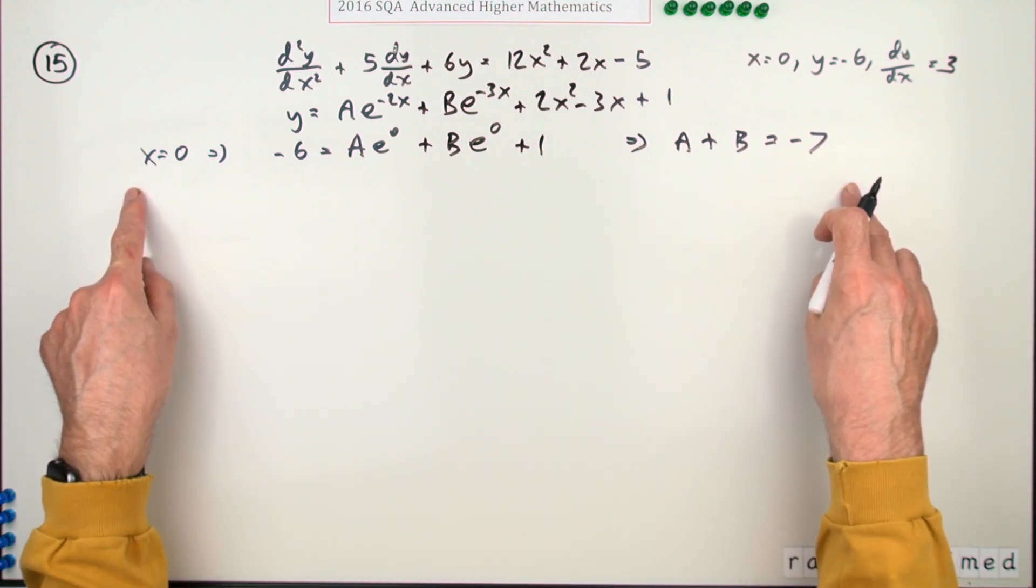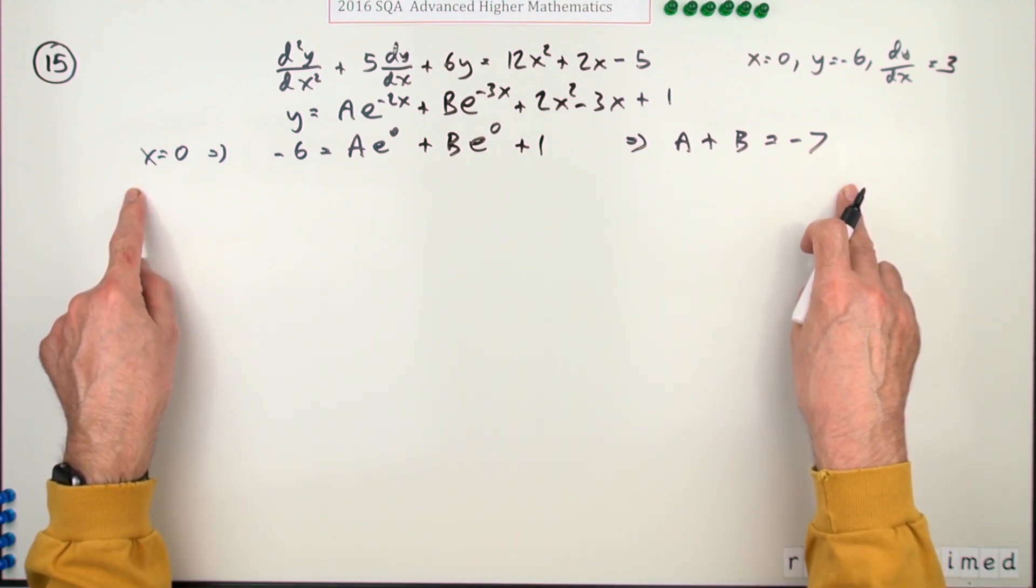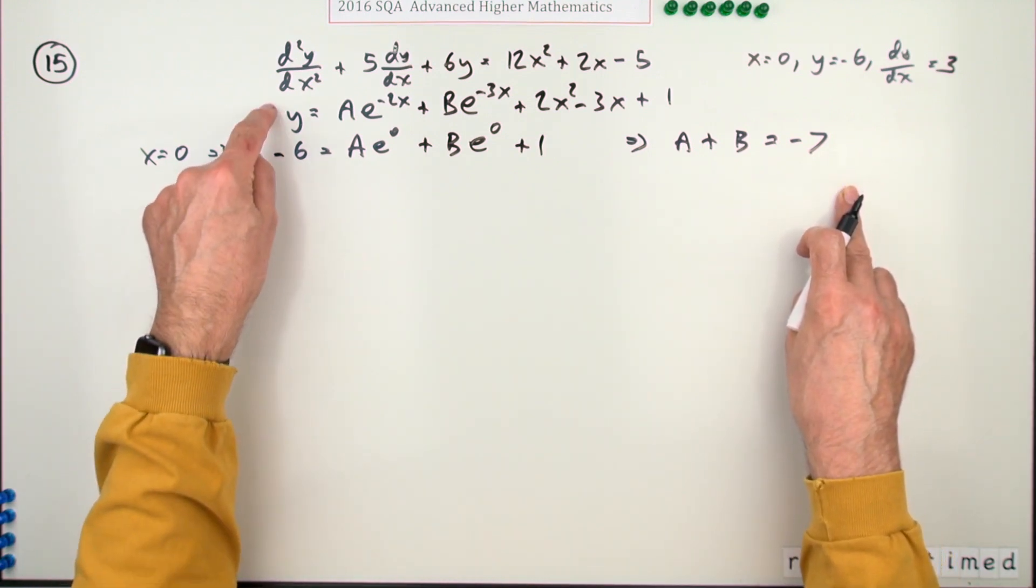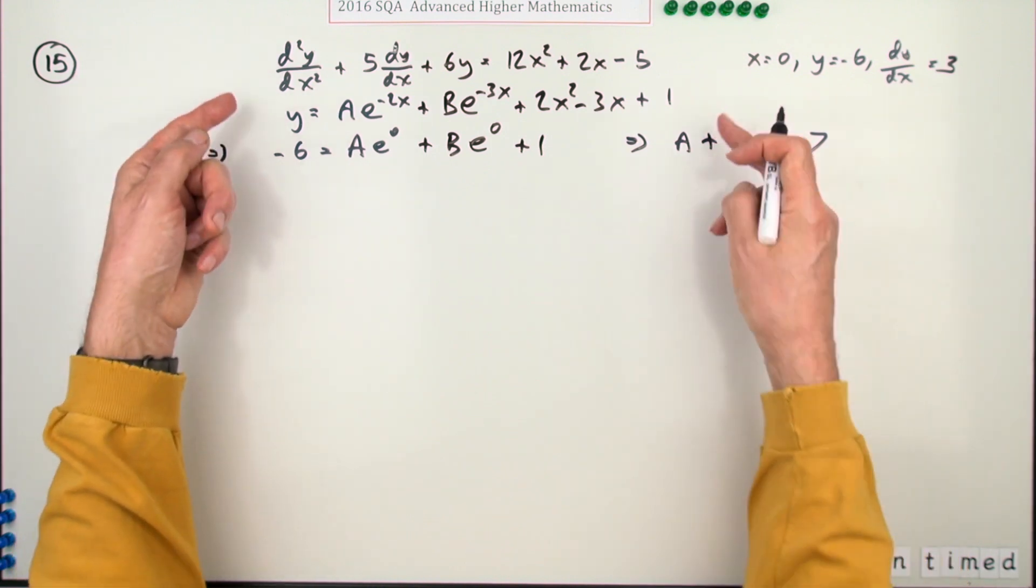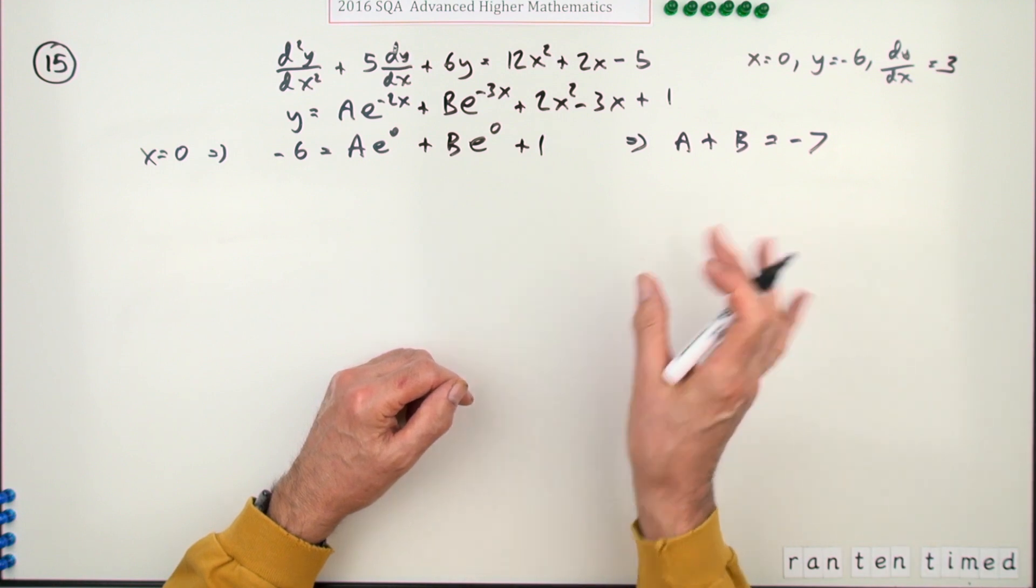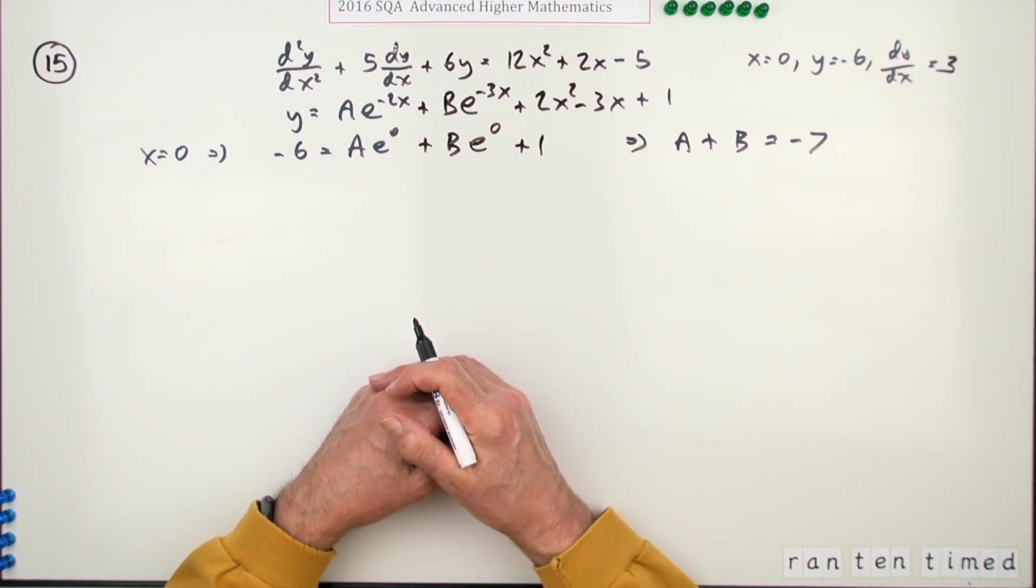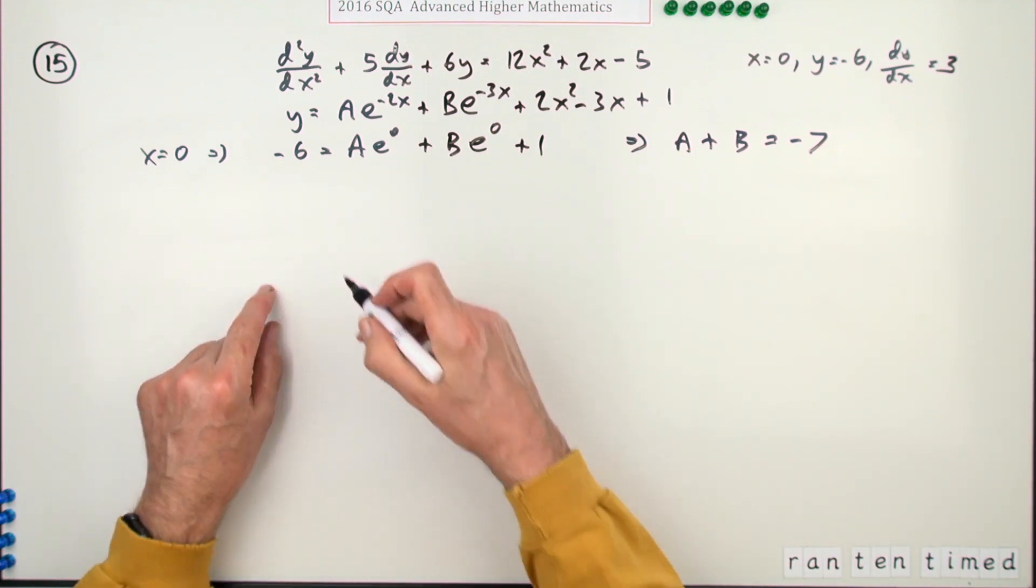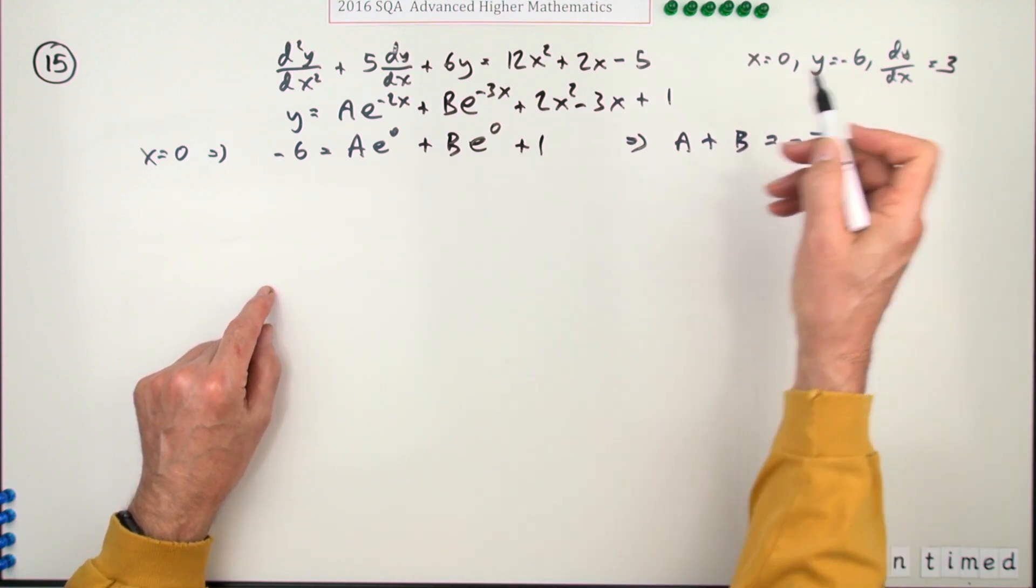So unfortunately I didn't find one of them straight away. I'm going to end up with a pair of simultaneous equations. But this just says A plus B equals, and taking that across, negative 7. There's no mark actually allocated yet. The way they've allocated the marks is you get one mark when you differentiate that, but of course you're not going to do that until the following line. And then the next mark for the pair of simultaneous equations which result from it.